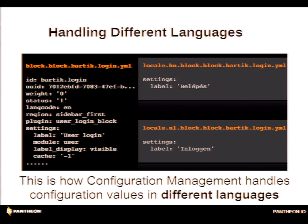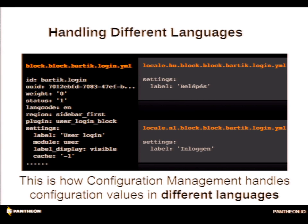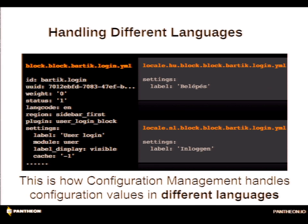You also have the ability to modify different languages. For developers with a multilingual site, the YAML files allow for the same sort of i18n prefixes, so you can have Dutch language or Hungarian language. Because you'll have a site title or other labels in different languages, it supports all of this pretty cleanly, which is pretty excellent.